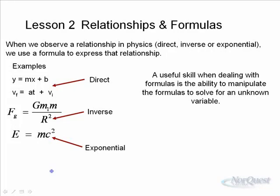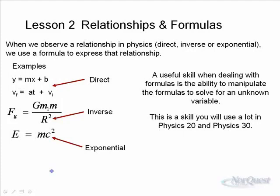One of the things we do with these relationships, once we've established which one we're working with in a particular situation or experiment, is to take the given formula and possibly manipulate it into a new form. This is a skill that you use a lot in Physics 20 and 30, so let's take a look at how that skill starts and how you can develop it.